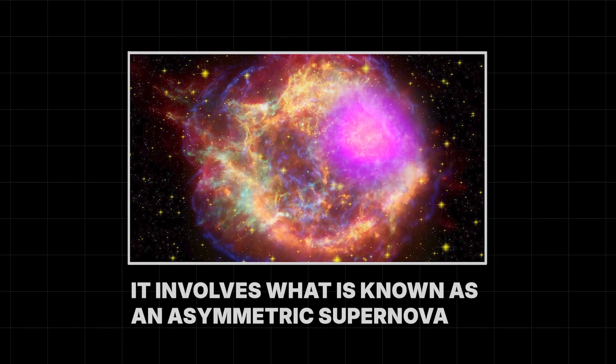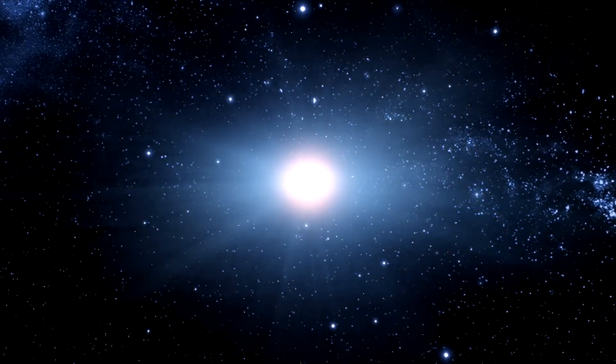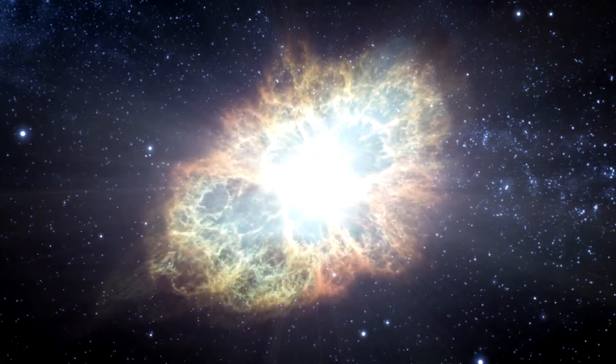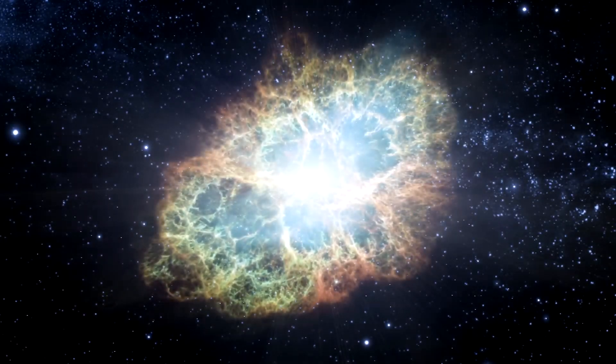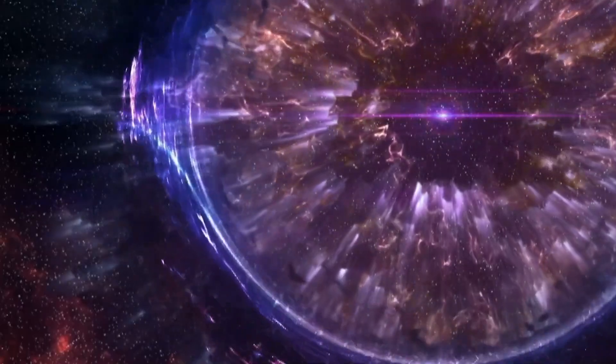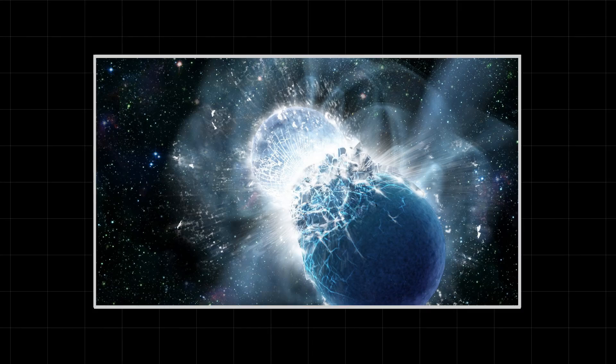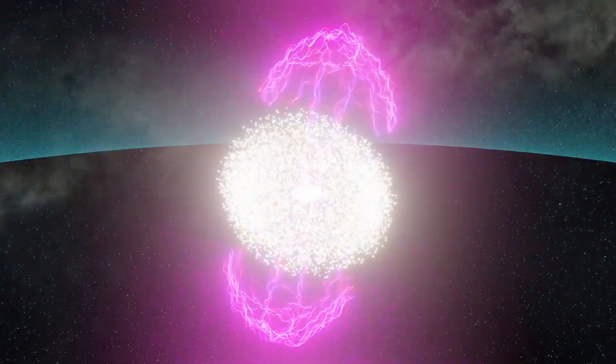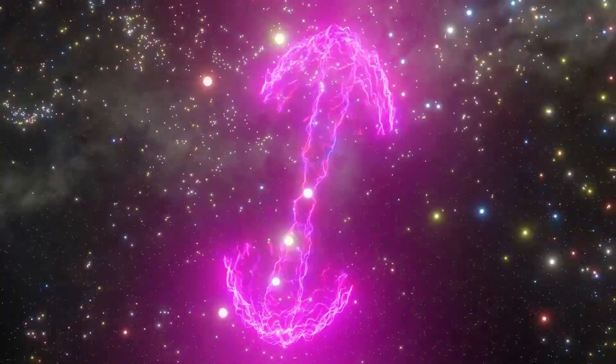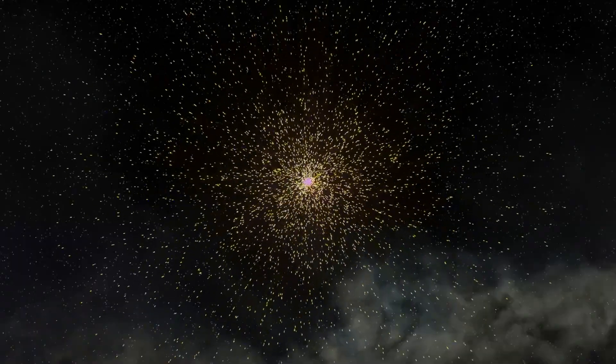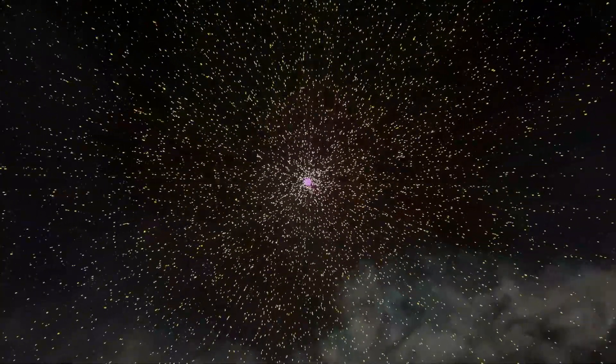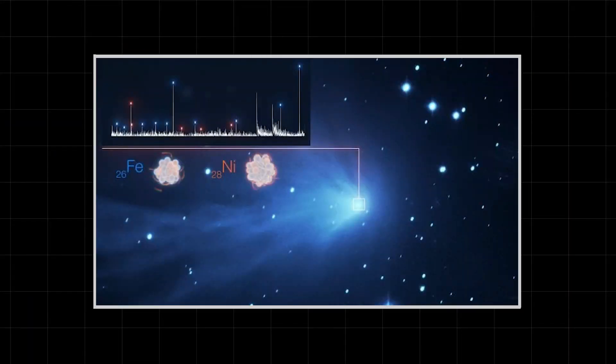Another possibility is just as violent. It involves what is known as an asymmetric supernova. A supernova is the explosion that happens when a giant star reaches the end of its life. Usually these explosions are fairly symmetrical, expanding outwards in a rough sphere. But what if the explosion was lopsided? If a massive star was spinning incredibly fast, or if it was in a tight binary system with another star, the explosion could be funneled into powerful jets. These jets would be like cosmic blowtorches, moving at nearly the speed of light. They would be so hot and so energetic that they could alter the chemistry of any surrounding material. This could explain the strange separation of nickel from iron.